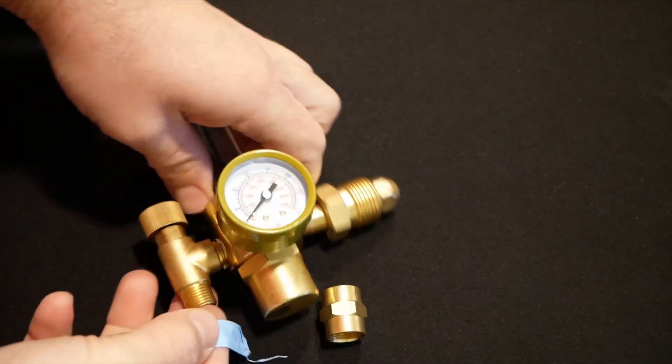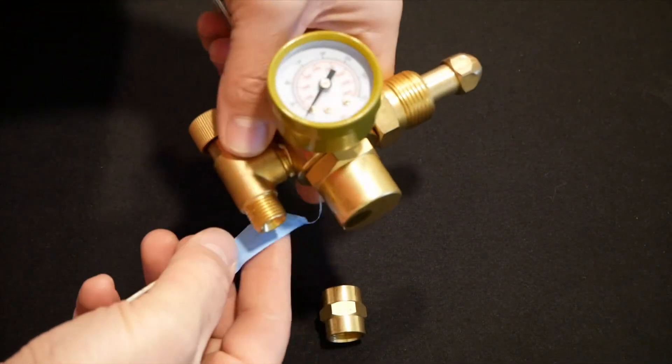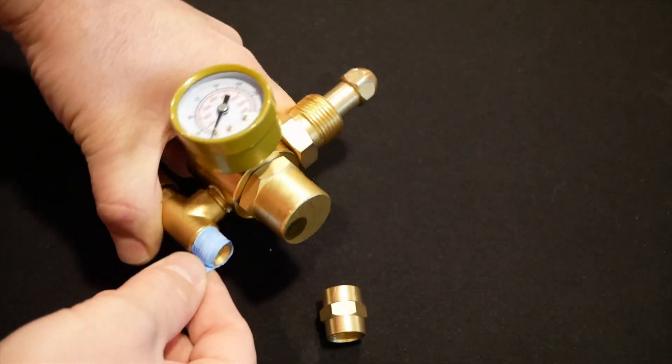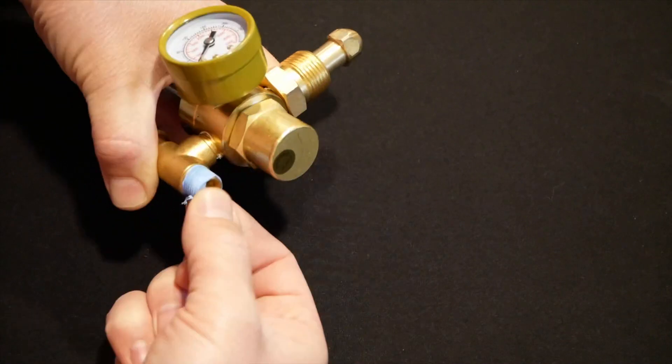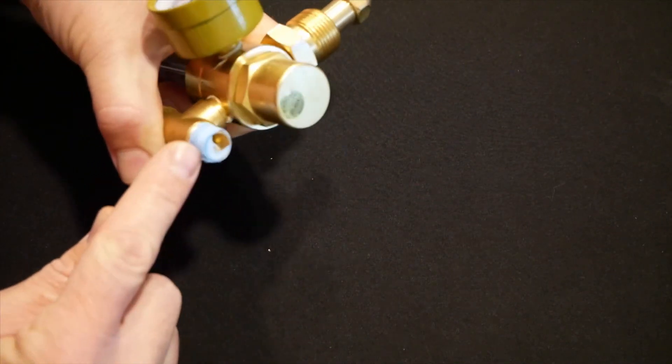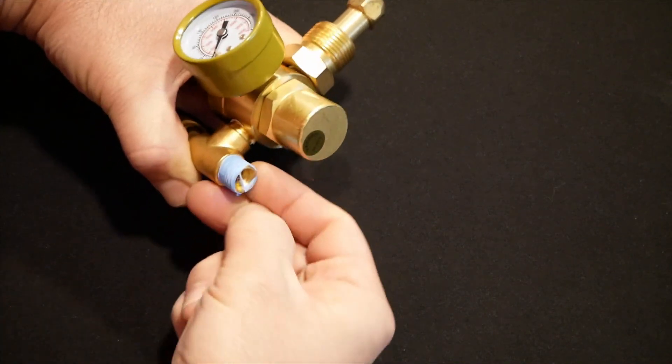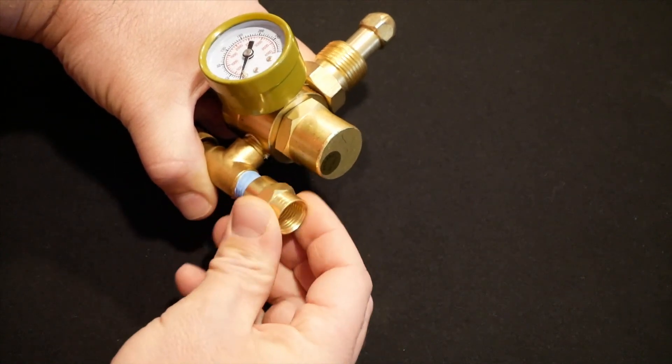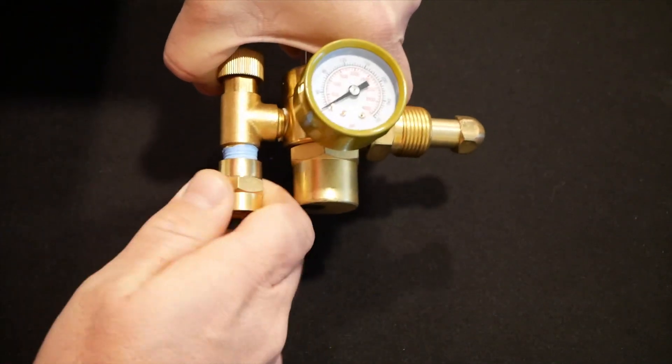Next, we need to install some Teflon tape on the threads on our flow meter. This will ensure that the coupler we're going to install seals correctly. Be sure that none of the Teflon tape covers the orifice. Otherwise, a piece of material could fly through the gas line and get clogged in the solenoid valve. Install the coupler and tighten it down with a wrench.